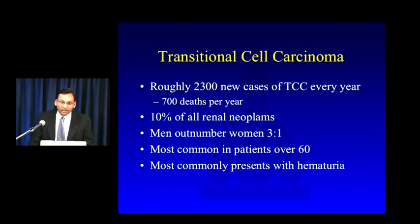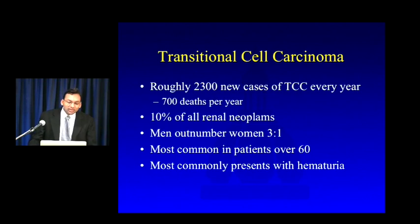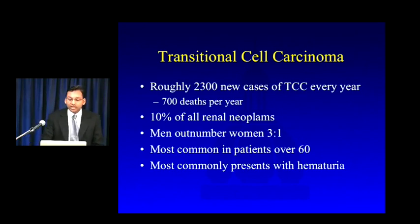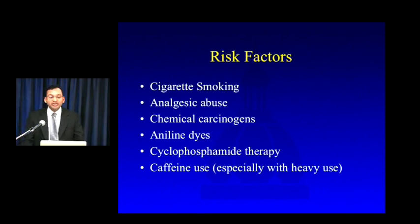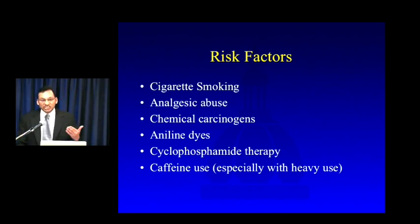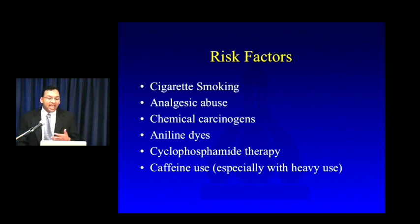Transitional cell carcinoma is relatively rare, certainly more rare than renal cell carcinoma, and tends to be found most often in men, especially elderly men. The vast majority of these patients will present with hematuria. There are a number of different risk factors, the most potent of which includes cigarette smoking, certain chemical carcinogens and dyes, cyclophosphamide, analgesic abuse including phenacetin, and in theory heavy caffeine use.